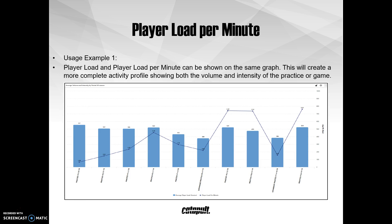Player load per minute used in conjunction with average player load will give a more complete activity profile of whatever session I'm looking at. I've graphed an entire preseason with average player load and player load per minute for each session. I can use this graph to see how we ramped up practice at the start of the season, how we tapered going into scrimmages, and how we recovered based on our scrimmages. Basically, this graph is a good way to objectively visualize our periodization schedule.